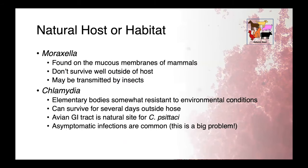Moraxella species are really host-associated. We find them on the mucous membranes of mammals, and they really don't survive well outside the host. In a veterinary context, Moraxella may be transmitted between individuals through mechanical vectors like insects. Chlamydia we also think of as host-associated, although those elementary bodies are somewhat resistant to environmental conditions and can persist for several days outside the host. Asymptomatic or subclinical infections are really, really common, and this is a big problem for identifying carriers and potential reservoirs within a herd or population.